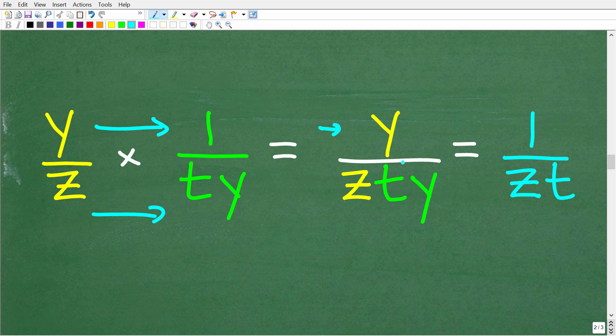Alright, now at this stage, we have like factors, because all of these variables right here are separated by multiplication. So in other words, this is z times t times y. So we have a factor y up in the numerator. And we also have a factor y down in the denominator. So we can cross cancel those two factors right there. And we're left with one over z t.